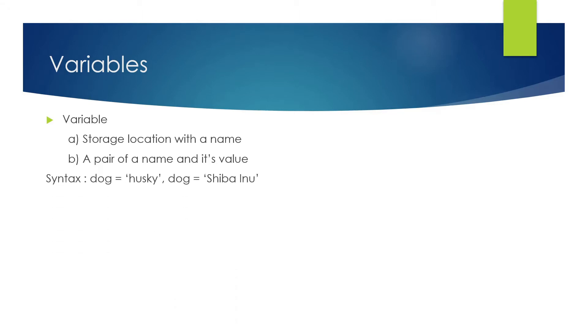The syntax is something like this: if you have given a variable name 'dog', you can put a value inside it like 'husky', or another example is 'shivanu'. This is how you can do it — this is a very basic syntax.